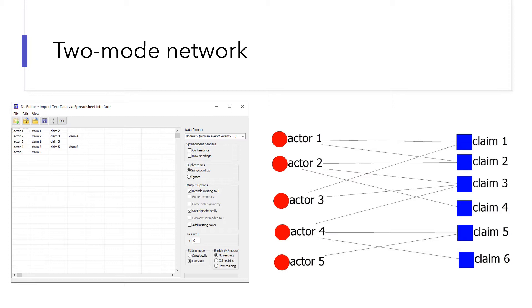For example, I read the policy discourse and coded that school district superintendents, teachers, and education researchers expressed that it is misleading to have a summative score of school performance in the state accountability system. The actors are school district superintendents, teachers, and education researchers. Their claim is that it is misleading to have a summative score of school performance in the state accountability system.